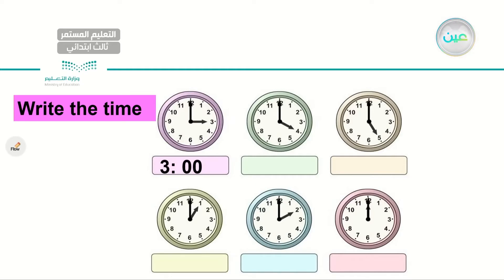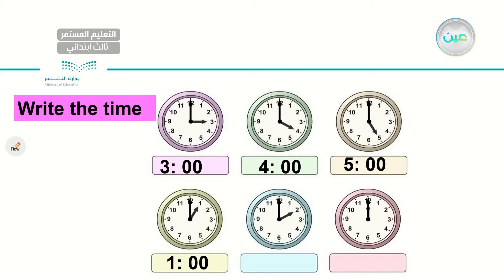Let's read our answers one more time: it's 3 o'clock, it's 4 o'clock, it's 5 o'clock, it's 1 o'clock, it's 2 o'clock, and it's 12 o'clock. Now help me draw the hands of the clock. The long hand is given — this is how we draw the short one. For 3 o'clock the short hand points to 3. For 5 o'clock the short hand points to 5.